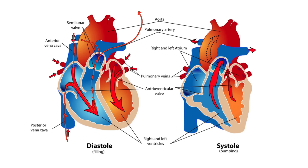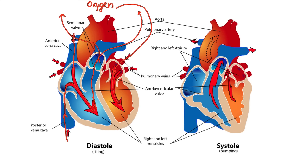Blood goes to the lungs in both directions. Once the blood goes to the lungs, it picks up oxygen, because you're breathing in the oxygen and that oxygenates the blood. Once the blood gets oxygenated, it leaves the lungs and goes via the pulmonary veins into the left atrium. The left atrium contracts, sending the blood through the left atrioventricular valve into the left ventricle. Once the blood is in the left ventricle, it contracts and sends the blood through the semilunar valve — or the aortic valve — into the aorta, and then that blood can go to the rest of the body.